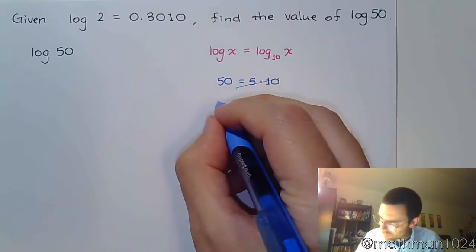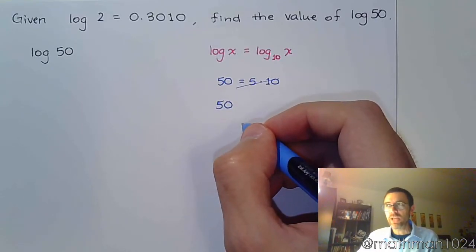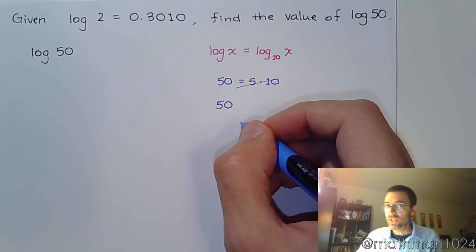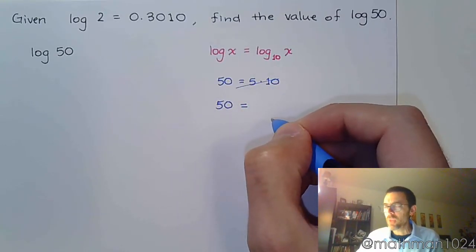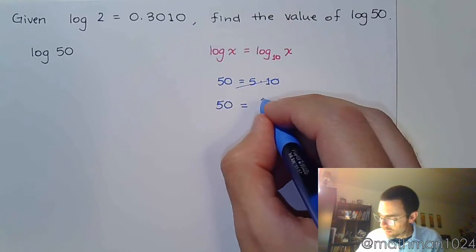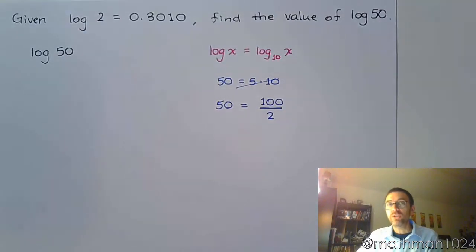Here's the trick. Sometimes it's not all about multiplication, but how can you rewrite this as a division problem? Well, we can rewrite 50 to be 100 divided by 2.